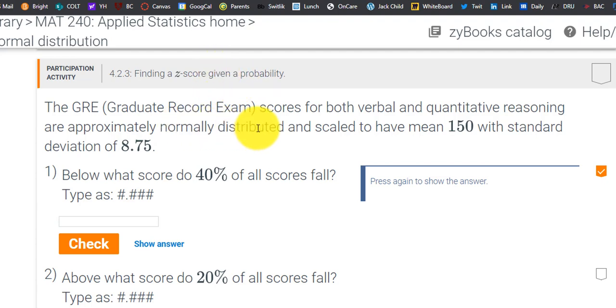The question says the GRE scores for both verbal and quantitative reasoning are approximately normally distributed, which is great, and scaled to have a mean of 150 with the standard deviation of 8.75. And then it says below what score do 40% of all scores fall?